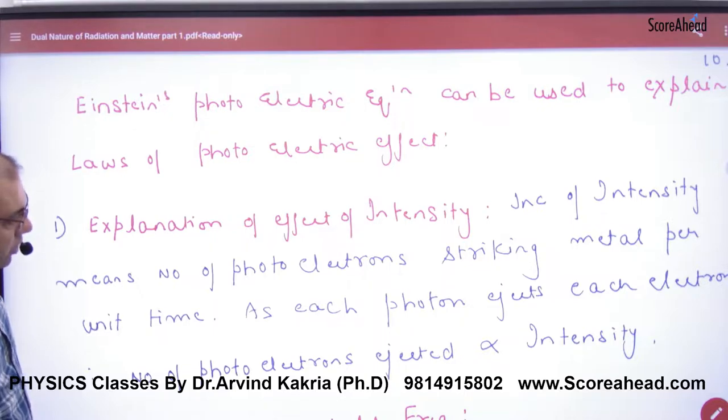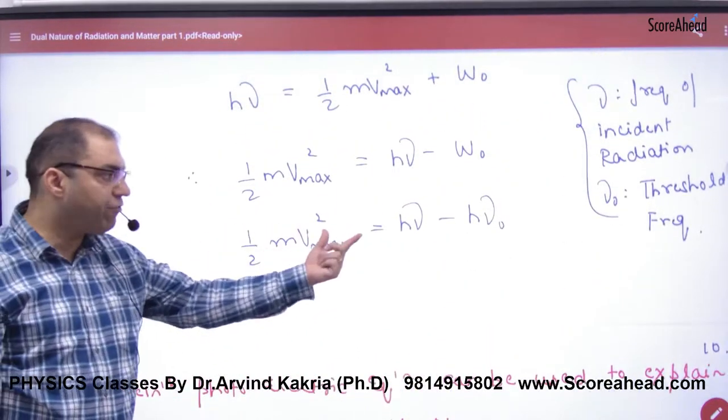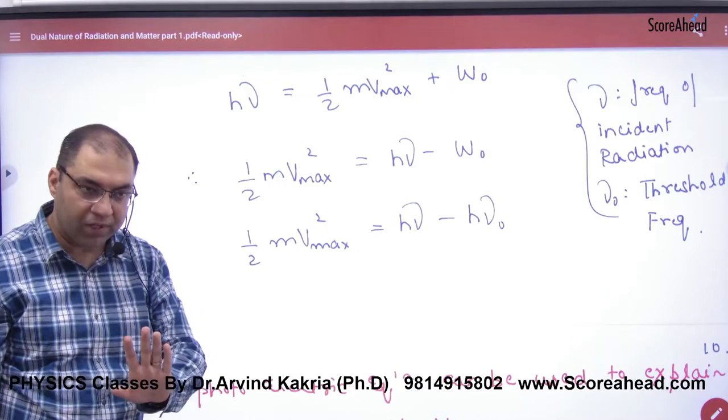Einstein's photoelectric equation can be used to explain the laws of photoelectric effect. The four laws were mathematically proven. This equation is valid for one photon and one electron; it does not directly give intensity.